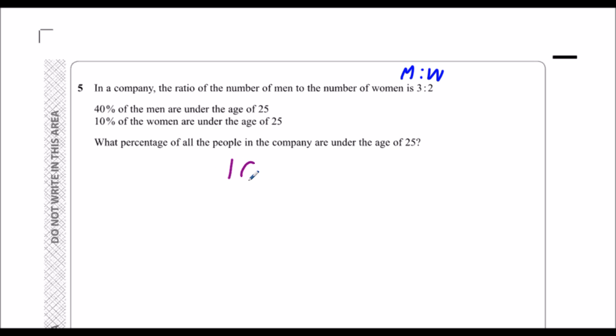So if you start with 100, then we're just going to split it up. The ratio of men to women is 3 to 2. So that means I've got 3 parts men, 2 parts women. So I've got 100, I'm going to split it between the 5 boxes.